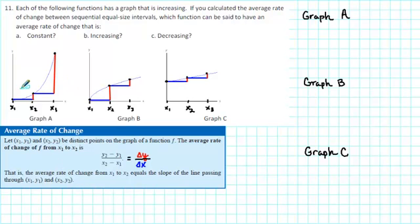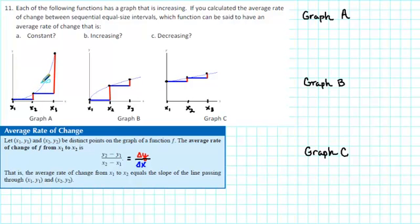First of all, notice that each graph is increasing. Graph A rises from left to right. Graph B rises from left to right. Graph C also rises from left to right. All three graphs are increasing. However, they increase in different ways. Graph A is curving in an upward direction. Graph B is curving in a downward direction. Graph C doesn't curve at all — Graph C is the graph of a straight line.